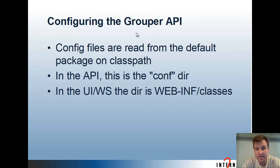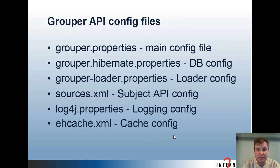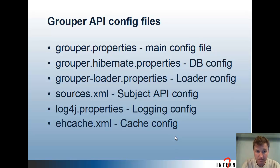For configuring the Grouper API, config files are read from the default package on the class path — in the API that's the conf directory, and in the UI, web services, or web app. The Grouper API config files are: grouper.properties, which is the main configuration file; grouper.hibernate.properties, which has the connection settings for the database; grouperloader.properties, which configures the loader with configurations for SQL data sources; sources.xml, which configures the subject API telling Grouper how to get to the people that can be added to groups; log4j.properties, the logging configuration for log level and packages; and ehcache.xml, the cache config.